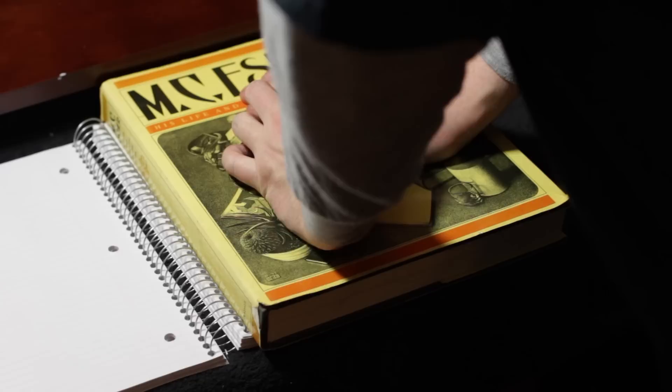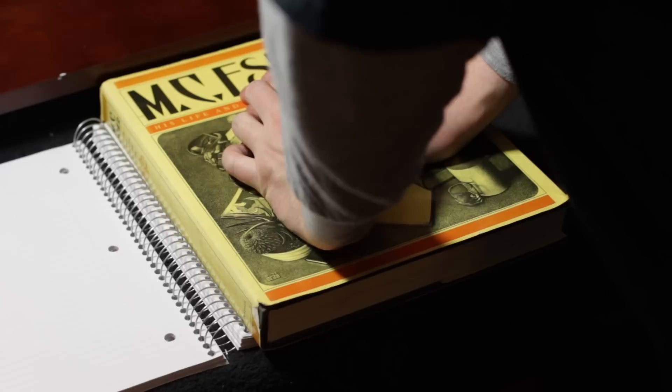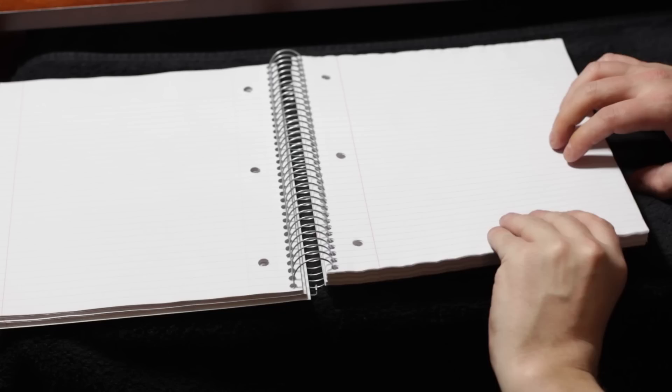Now once you have a solid coat around the three open edges, it's time to apply some pressure. Grab a heavy book and place it on top. Press down and make sure all those pages are connected. This is going to form our block.